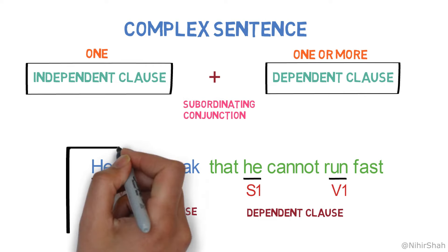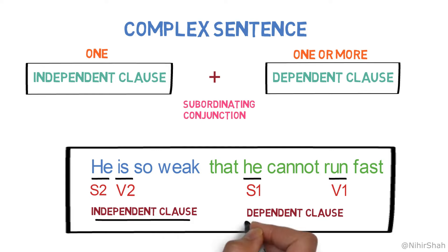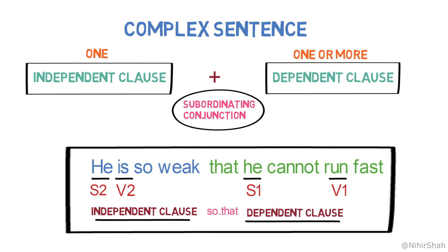Now, let's combine these two clauses and the final sentence is: 'He is so weak that he cannot run fast.' Here, there is one independent clause and one dependent clause, and it is joined by the subordinating conjunction 'so that.' So, to form a complex sentence, you would require an appropriate subordinating conjunction.